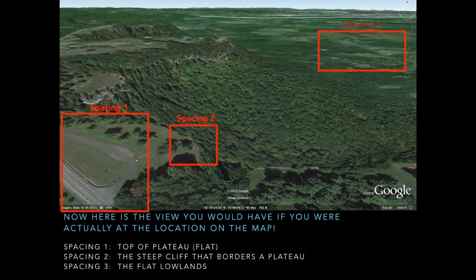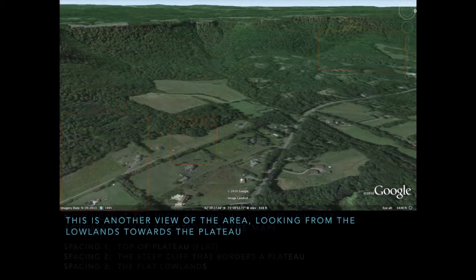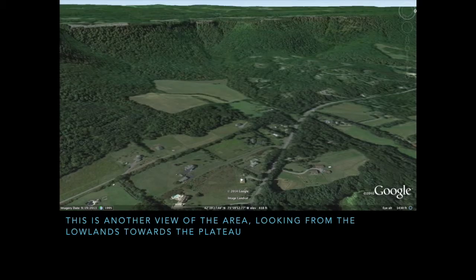And one last view of that in a real-life perspective. Here's another view, but we're looking from the Hudson Mohawk Lowlands toward the Allegheny Plateau — the opposite direction than we just previously looked at. Again, we can see that flat top plateau with its steep drop off to the lowlands.